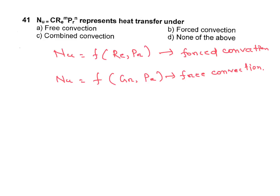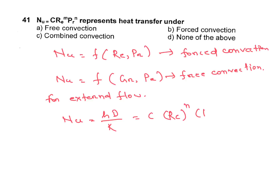One more important thing: for external flow — flow over a flat plate — Nusselt number is h into d (where d is the characteristic dimension) divided by k, and equals C into Re to the power n, into Pr to the power 1/3.